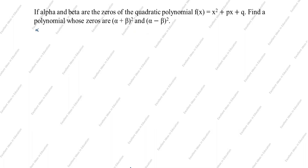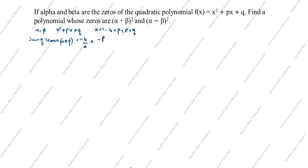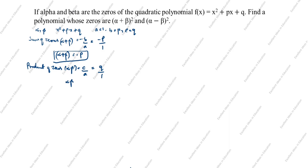For a general quadratic polynomial x² + px + q, we have a = 1, b = p, c = q. The sum of zeros: α + β = −b/a = −p/1 = −p. The product of zeros: αβ = c/a = q/1 = q.